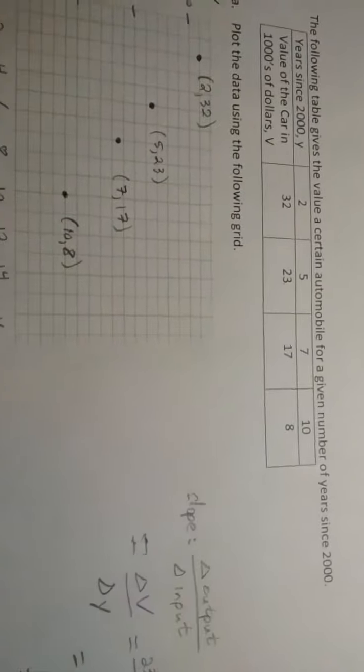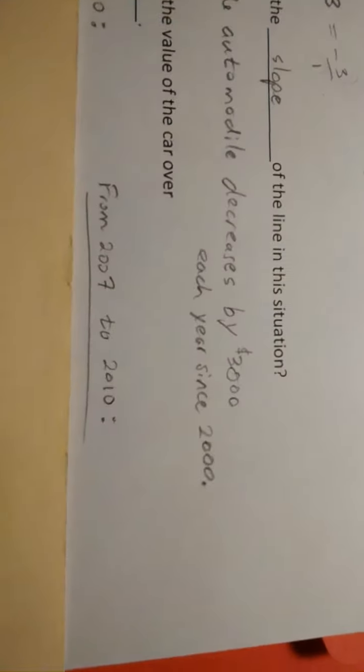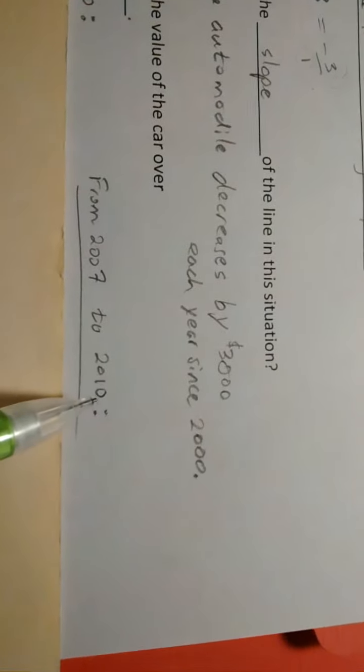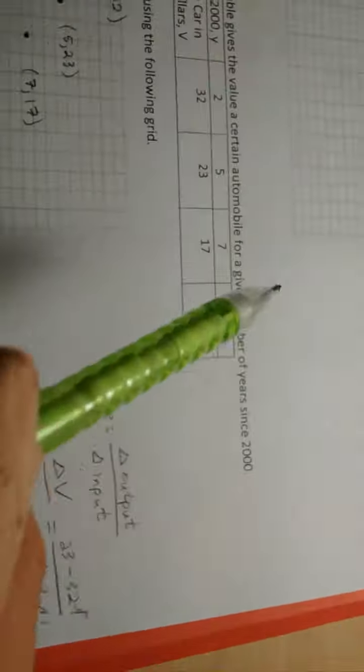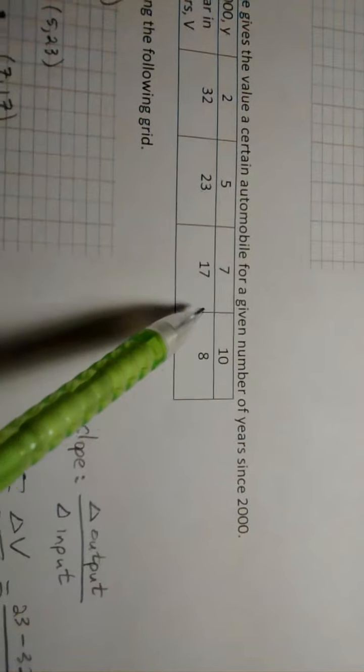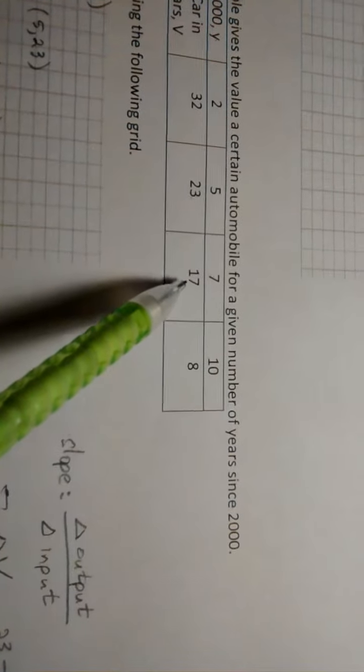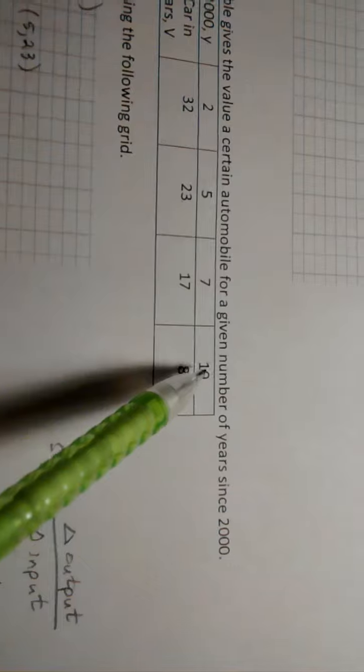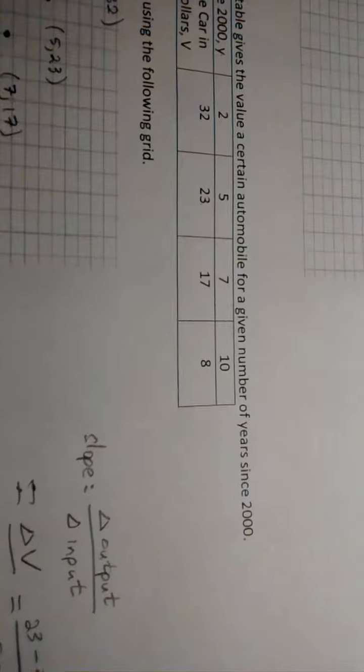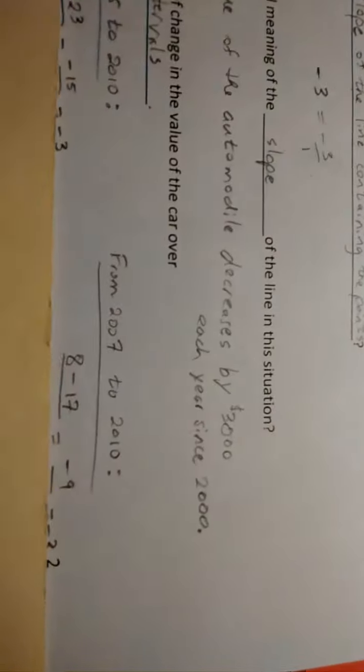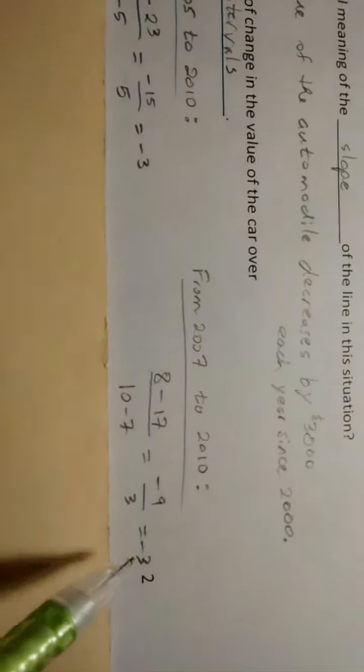Let's do it from 7 to 10 here. So from years 2007 to 2010, what's the average rate of change for there? So we would take that minus that, that's a negative 9, and then that minus that, which is a 3. So we get negative 9 over 3, and that also is a negative 3.